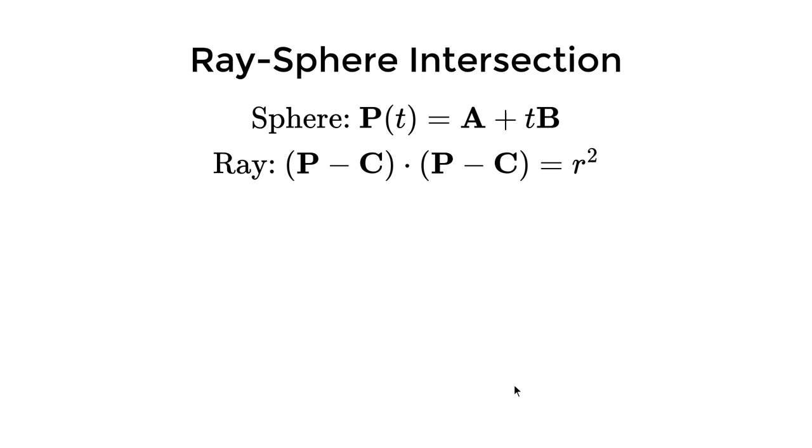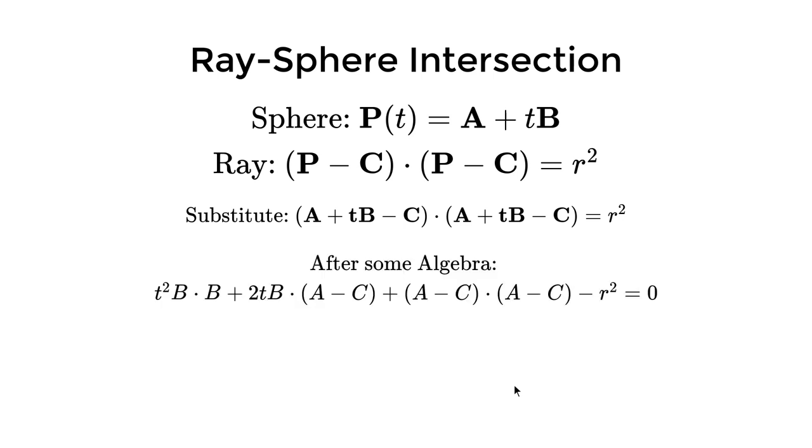So now we have one equation and one function. Let's plug the ray function into the sphere equation. What we get is another equation and we can expand the dot product. Now what we get is a quadratic equation as the B·B term gives us t².